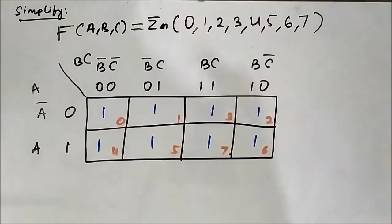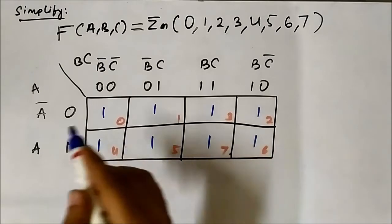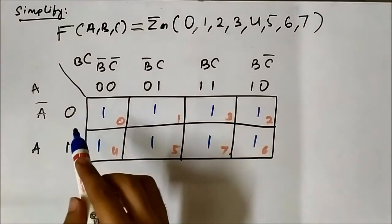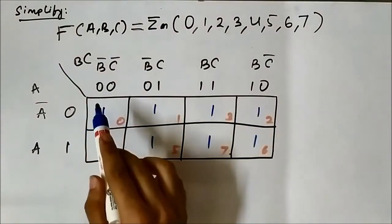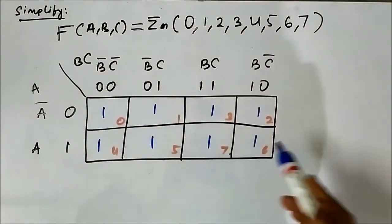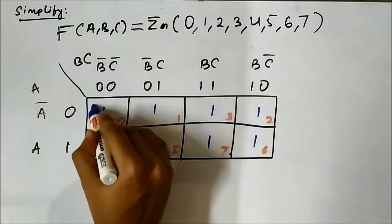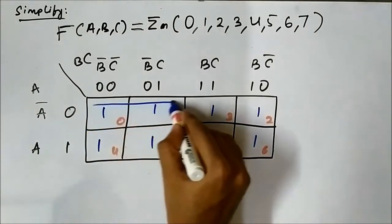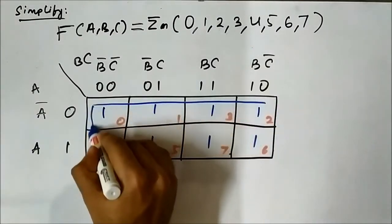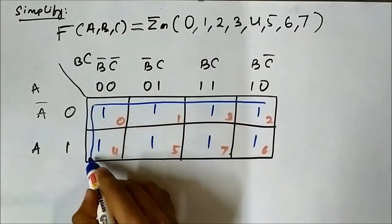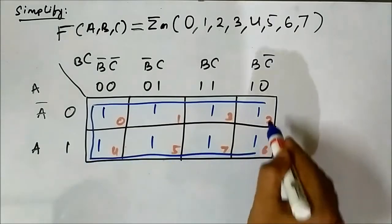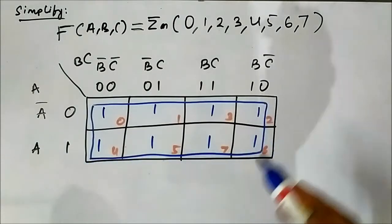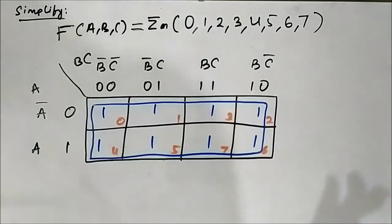All the cells are there, so the group which we can form here is one big octet — 1, 2, 3, 4, 5, 6, 7, 8. One big octet.